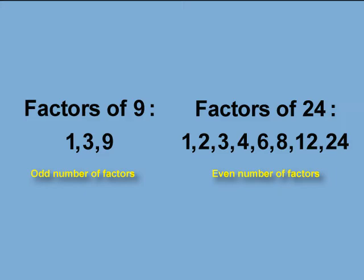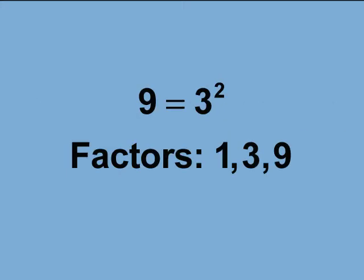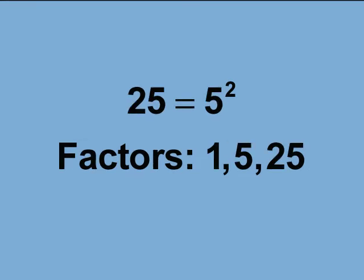Why is this? The number 9 is a square number. It can be written as 3 squared. Here are two more square numbers and their factors. 25 is 5 squared. Its factors are 1, 5, 25.